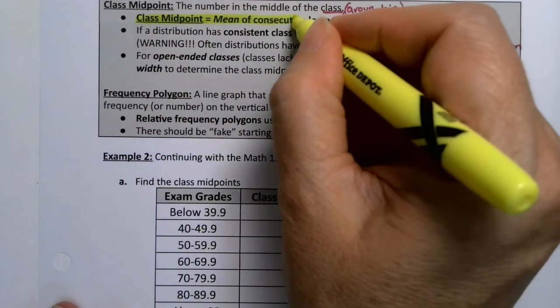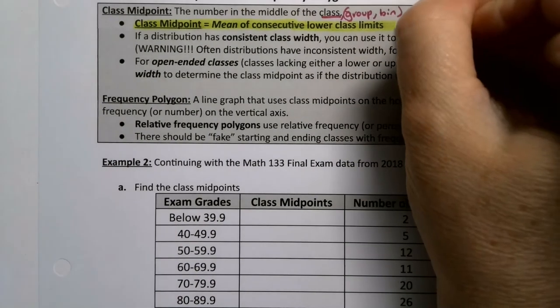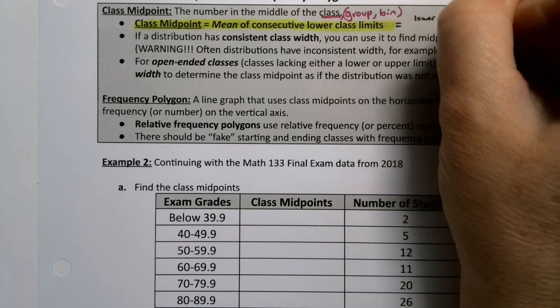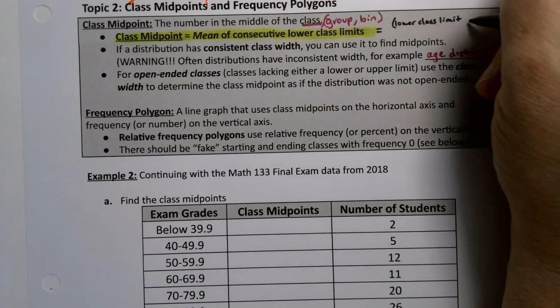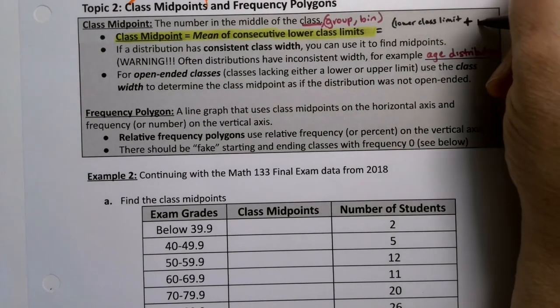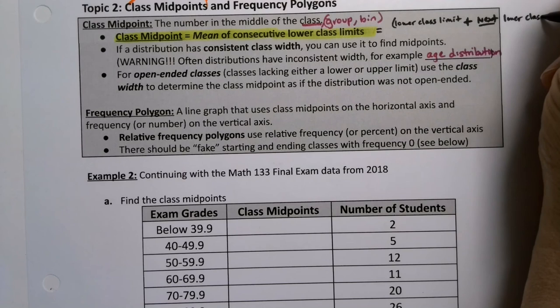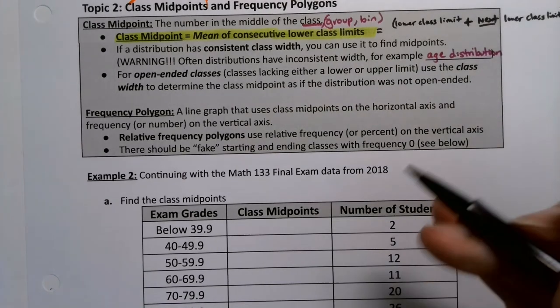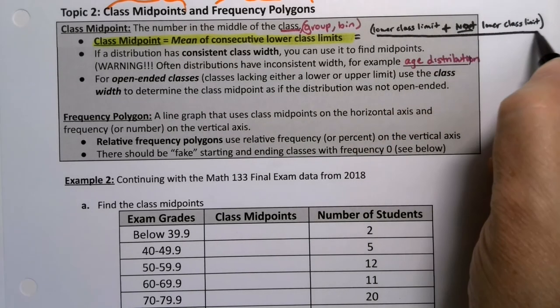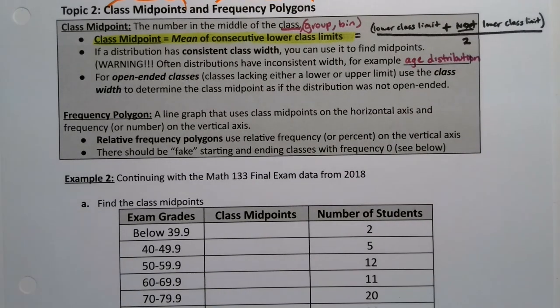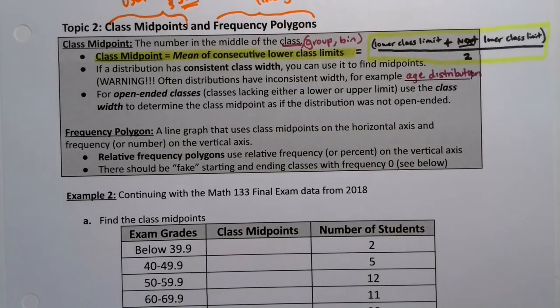Now, the midpoints are the mean of consecutive lower class limits. Well, what does that mean? Well, mean is something you'll learn in section 3.1, but basically it means you're going to add them up and you're going to divide by 2. So let me write it down. You take a lower class limit, I'm going to put this in parentheses because that's the big mistake students make, and then you add to it the next lower class limit. That's what it means by consecutive. One right after the other. Close your parentheses. So you add the lower class limit plus the next lower class limit. That's next. You add them up and you divide by 2. That's the formula.